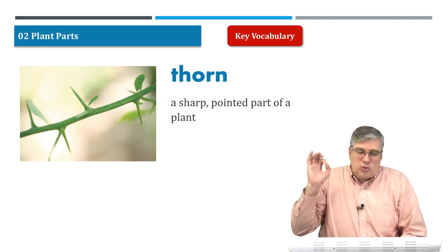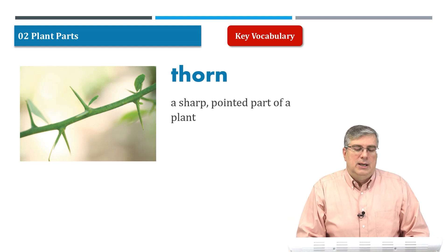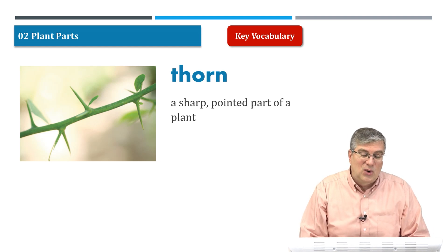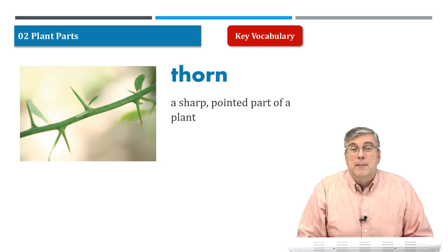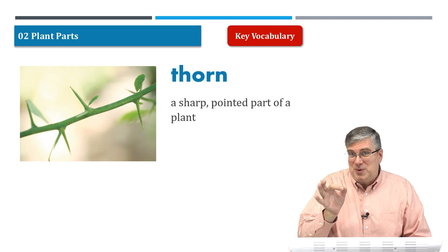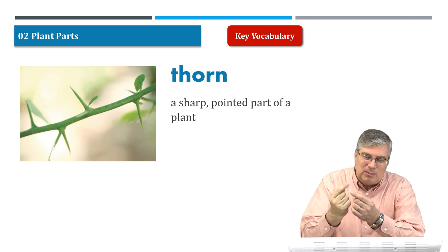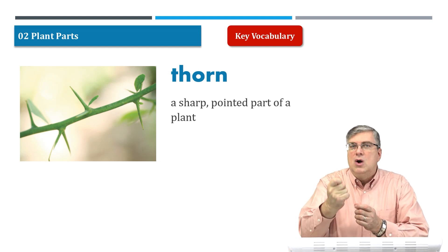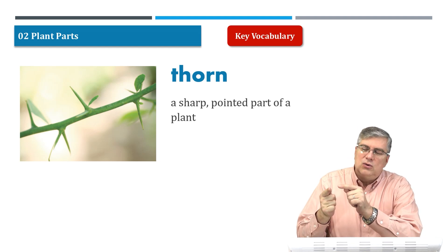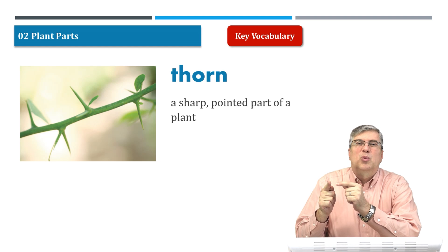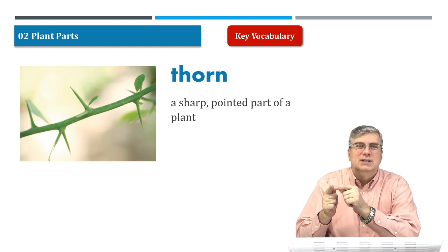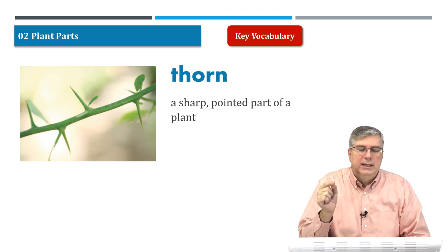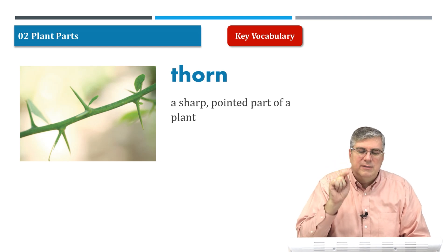Next, we have thorn. Ouch! Be careful. A thorn is a sharp, pointed part of a plant. It's a good picture of thorns. Do you like roses? Be careful picking or touching a rose bush because they have many thorns. If you want to give your mom or your girlfriend a rose, be careful holding it, because if the thorn pricks your skin, it goes into your skin and it may hurt you. Sharp, pointed part of a plant.